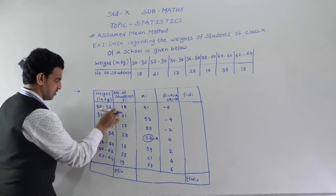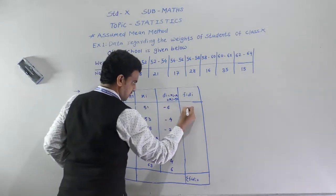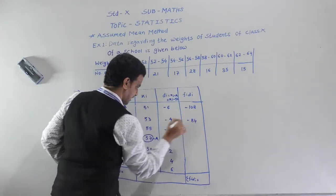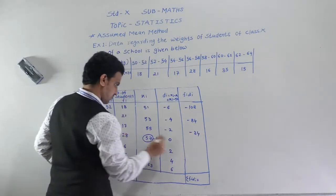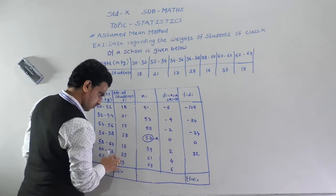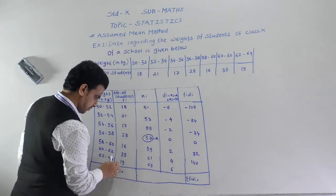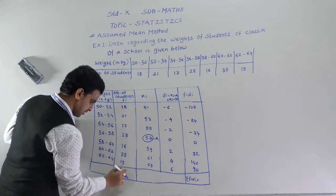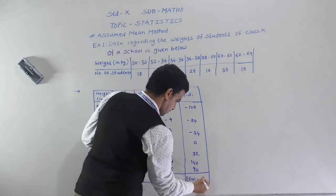Next we find fi × di for each row. The products are: −108, −84, −34, 0, 32, 140, and 90. Summation fi = 150. Now we calculate summation fi × di.